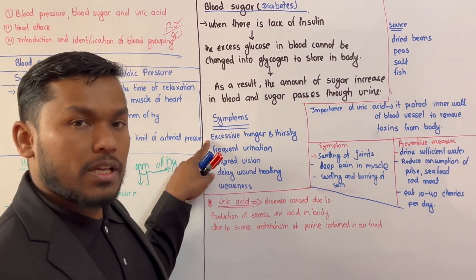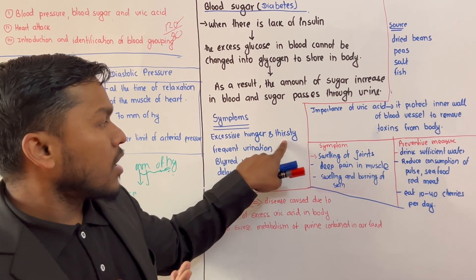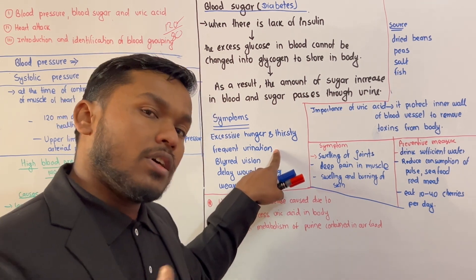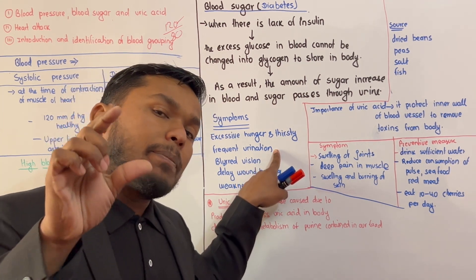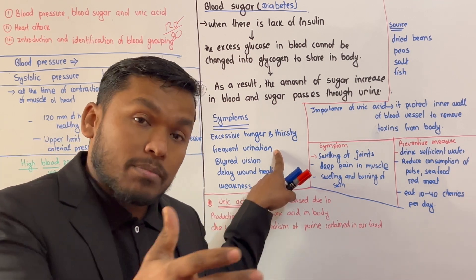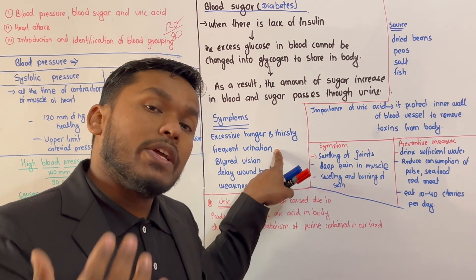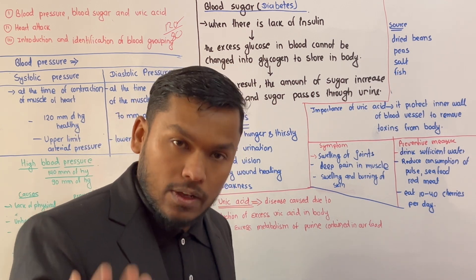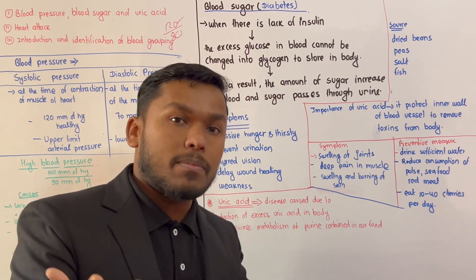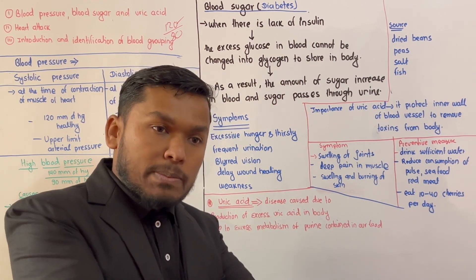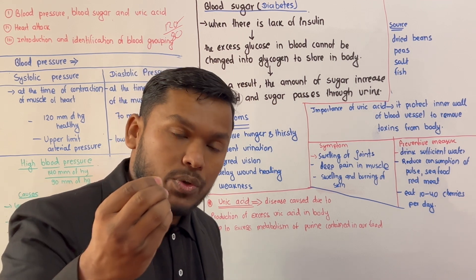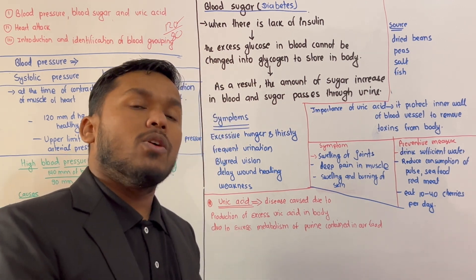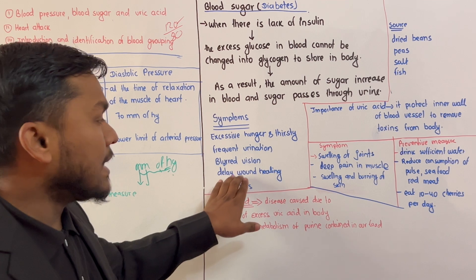Excessive hunger and excessive thirst are symptoms of diabetes. Patients drink more water, which leads to frequent urination. If they eat, they get glucose, but the blood cannot properly utilize it, leading to a cycle of hunger and urination. This is the delay of diabetes symptom onset.